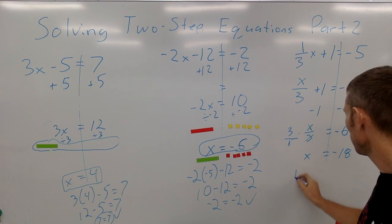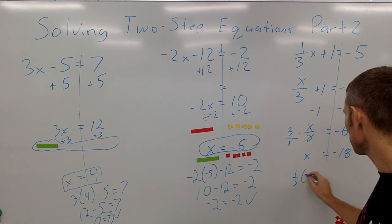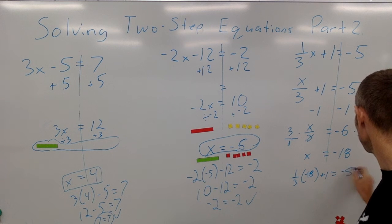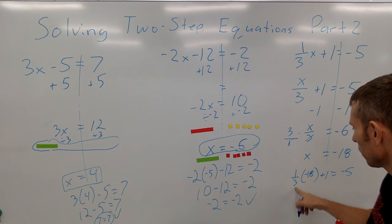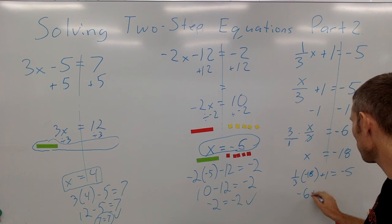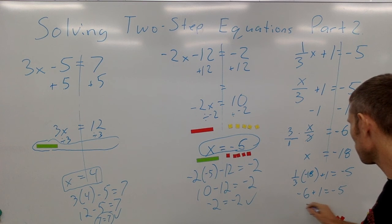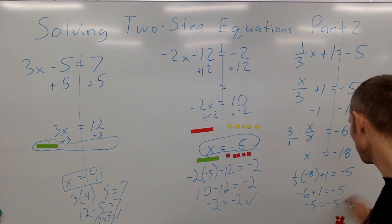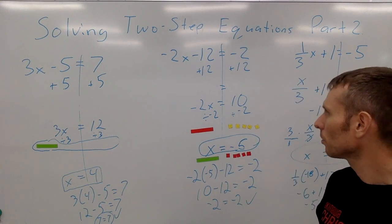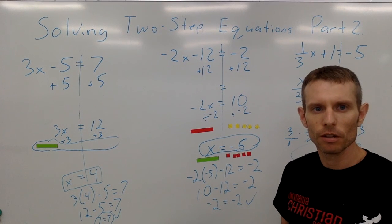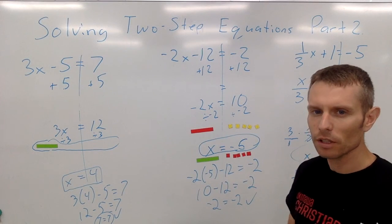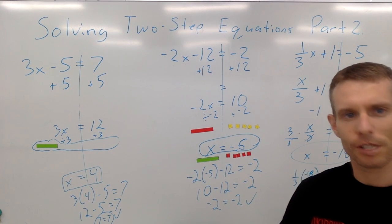Let's check: one-third times negative 18 plus 1 should equal negative 5. Negative 18 divided by 3 is negative 6, and negative 6 plus 1 is negative 5. So negative 5 equals negative 5 — that's correct. That was a lot of work. I hope you can rewind and watch again if you need to, and pause where needed. I hope you found it helpful — thank you for watching, see you next time.